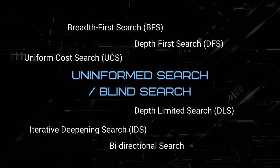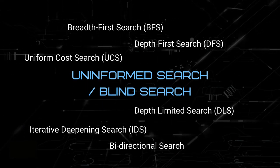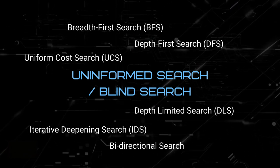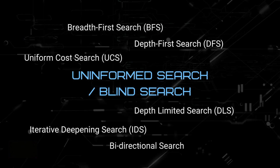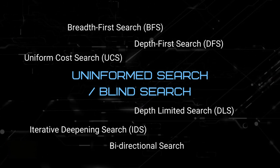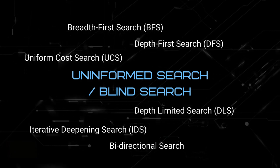Some examples of uninformed search, also known as blind search, include breadth-first search, depth-first search, depth-limited search, iterative-deepening search, and bi-directional search.